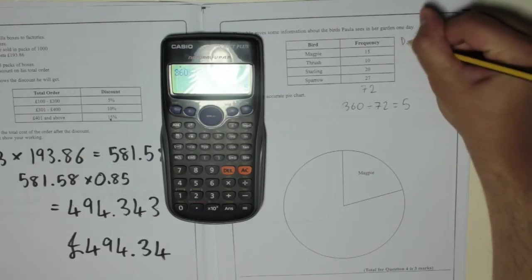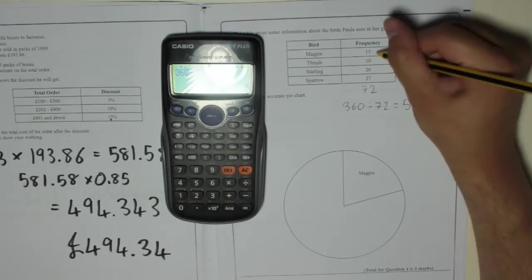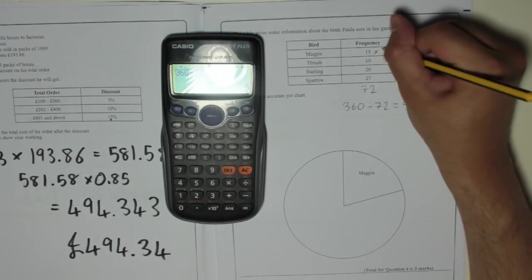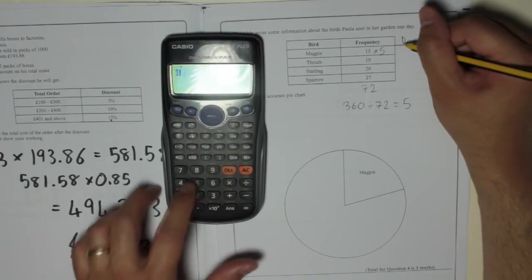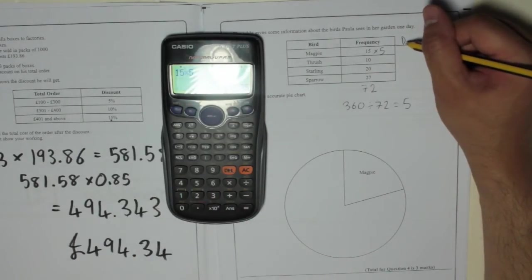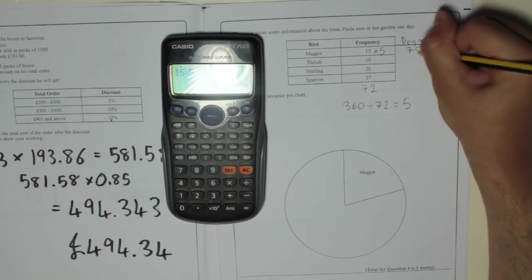I'm going to put another column here, degrees. And if every bird is worth 5 degrees, magpie would be 15 times 5. Could work it out in your head, but you might as well use your calculator. 75 degrees.